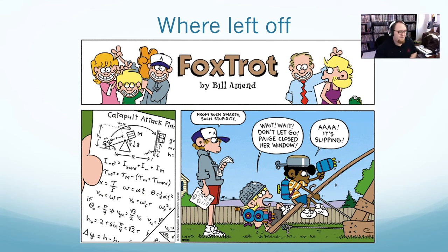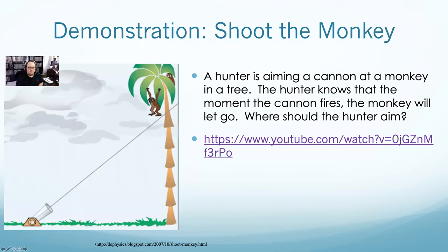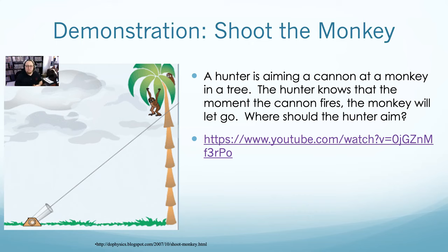There's a very classic physics problem that is admittedly not the world's most humane problem, but it's how it's always written. A hunter wants to hunt a monkey. There's a monkey in a tree, hanging on to a branch, just dangling. The hunter is below aiming up. The second the gun fires, the hunter knows the monkey is going to hear the noise and drop. At the exact second the bullet fires, the monkey goes into free fall. The question is: where do you aim? Do you aim above the monkey, at the monkey, or below the monkey — given that the second the gun fires, the monkey drops.